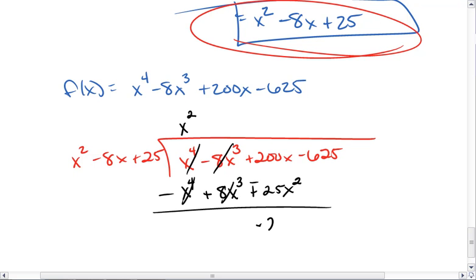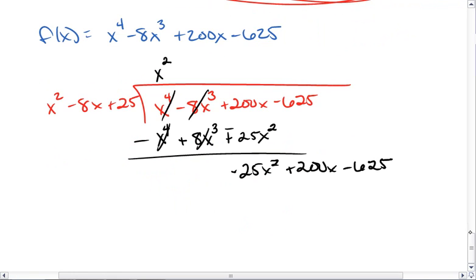So minus 25x squared plus 200x minus 625. So the 200 and the minus 625 just were carried down.